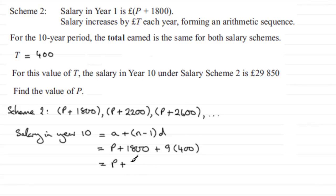...and that's going to be P plus 5,400. Now we know that this salary is meant to come to 29,850, so therefore what we have is that P plus 5,400 has got to equal 29,850.